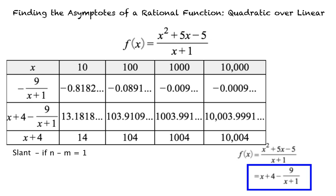So, as x increases or decreases without bound, f of x approaches x plus 4. That is, f of x has a slant asymptote of y equals x plus 4.